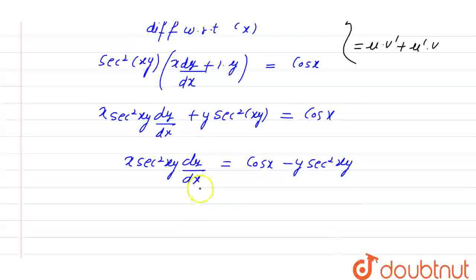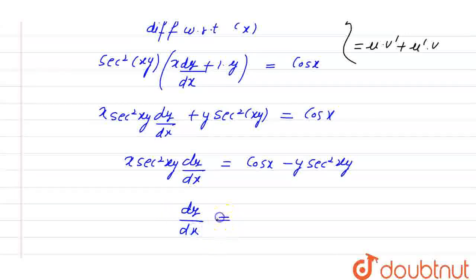So, the value of dy divided by dx is equal to cos of x minus y into secant square xy divided by x into secant square xy. Thank you.